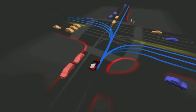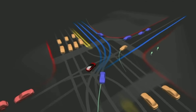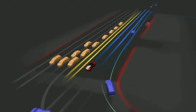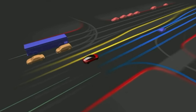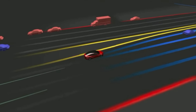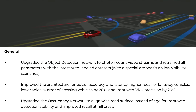For me, I'm really seeing four broad categories: performance-related changes, really improving latency and things like that; control, so adjusting things in the planner; lanes; and also vulnerable road users or VRUs. But first, three general bullet points. Tesla has upgraded the object detection network to photon count video streams and retrained all parameters with the latest auto-labeled datasets, with a special emphasis on low visibility scenarios.